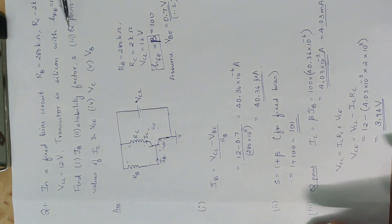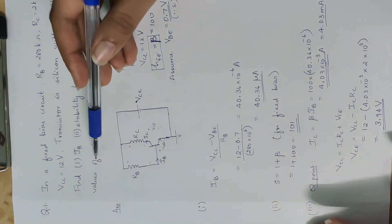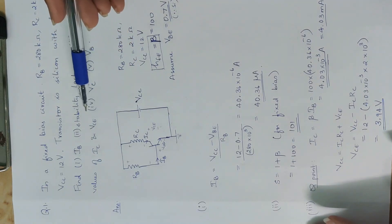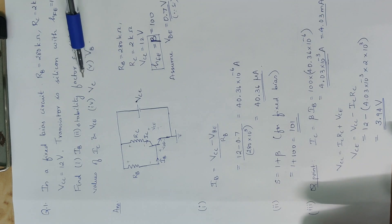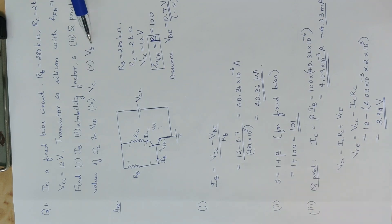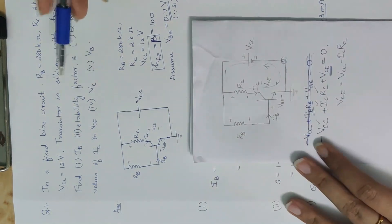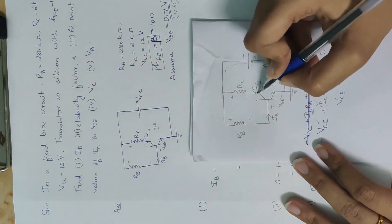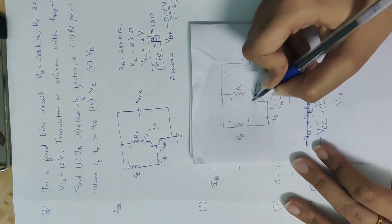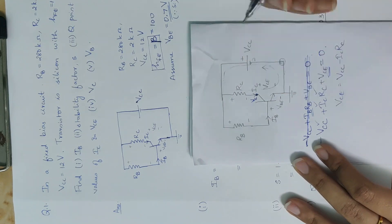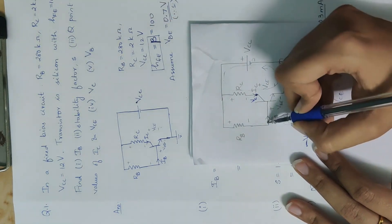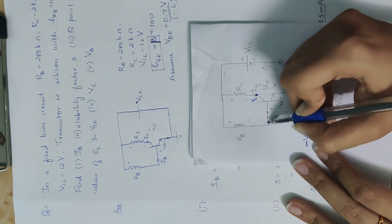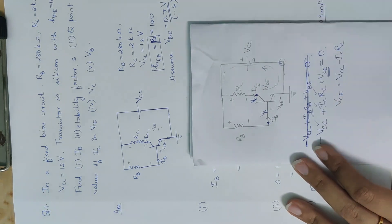Substituting the values: VCE equals 12 minus (4.03 × 10⁻³ × 2 × 10³) equals 3.94 V. So the Q-point values are IC and VCE equal to 3.94 V.